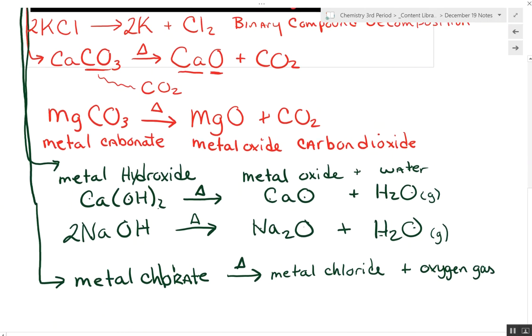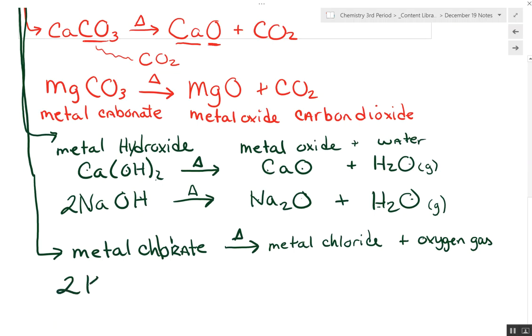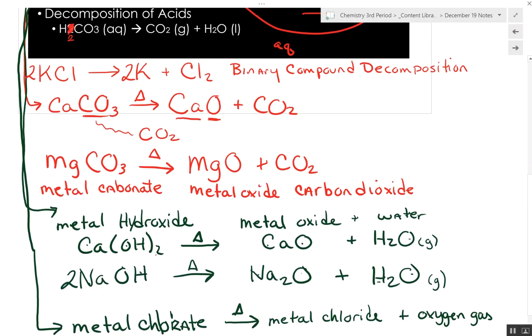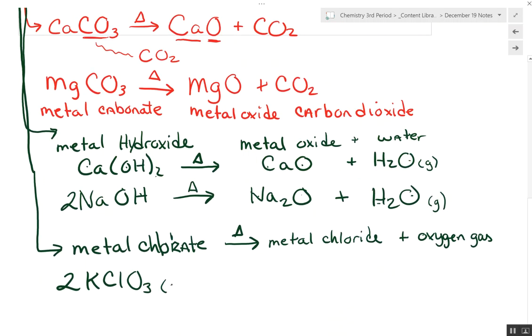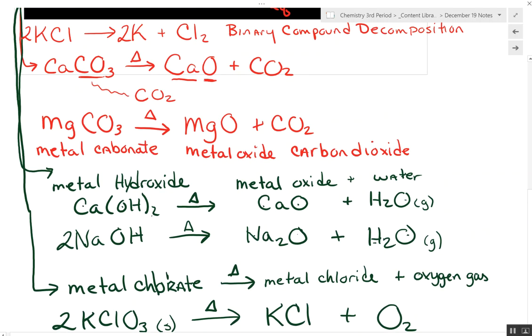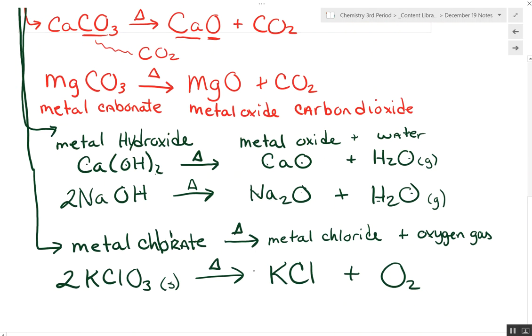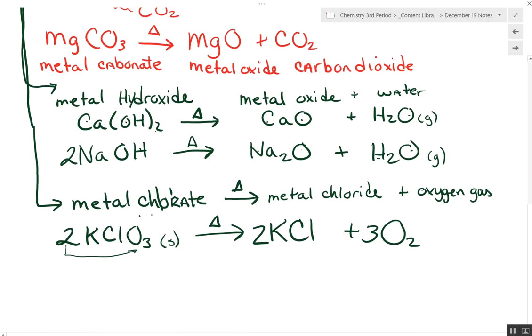In our case, we start out with two moles of KClO3. Make sure to verify that. And it's a solid. These are all solids that they start out with. Add heat. And we end up with potassium chloride and oxygen. But then to balance that, we have two chloride. So we got to put a two here. Now we have six oxygens because I started out with two. So I need to put a three over here to balance that. So chlorates decompose into chlorides and oxygen.